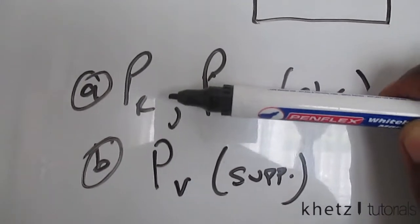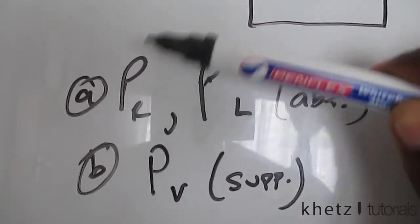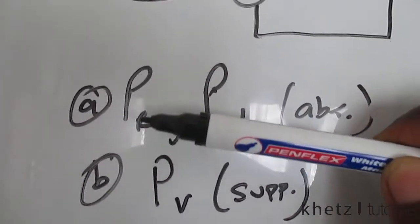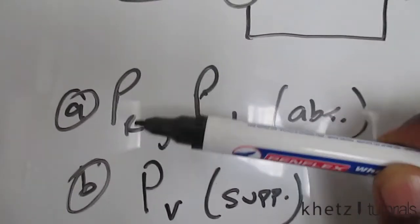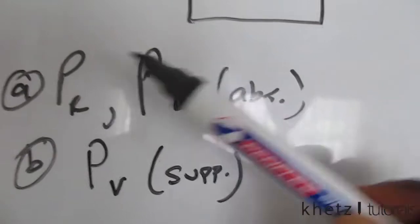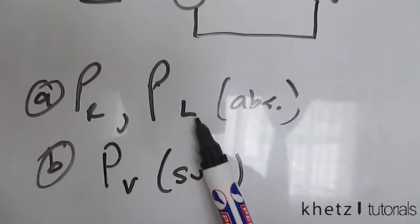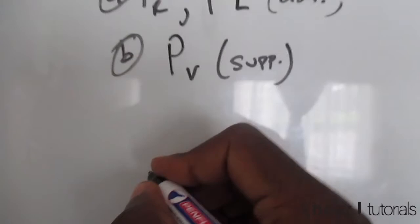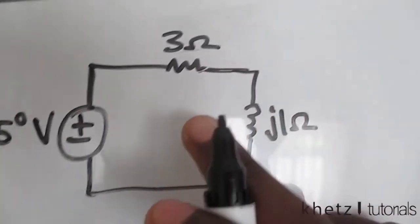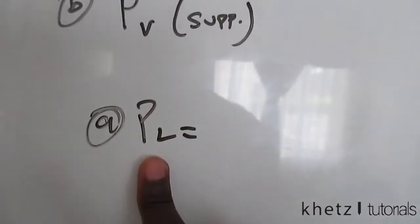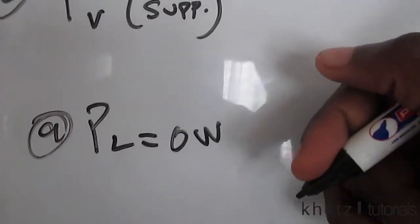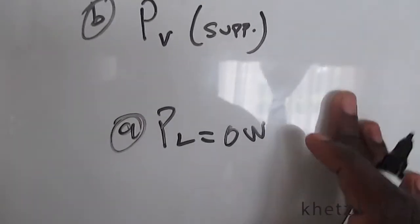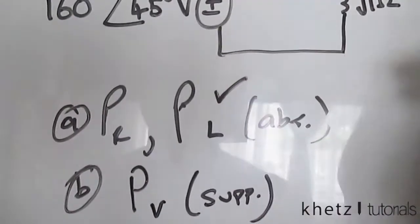The first part is asking for the average power absorbed by the resistor and the inductor separately. To start with, the power absorbed by the inductor is zero watts, because an inductor does not absorb power. So that part of the question is solved.